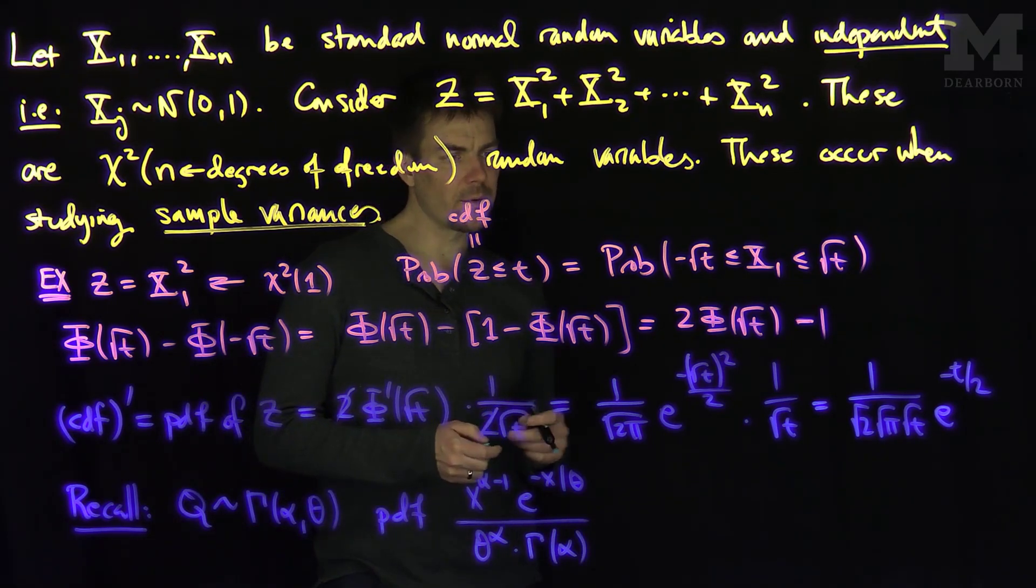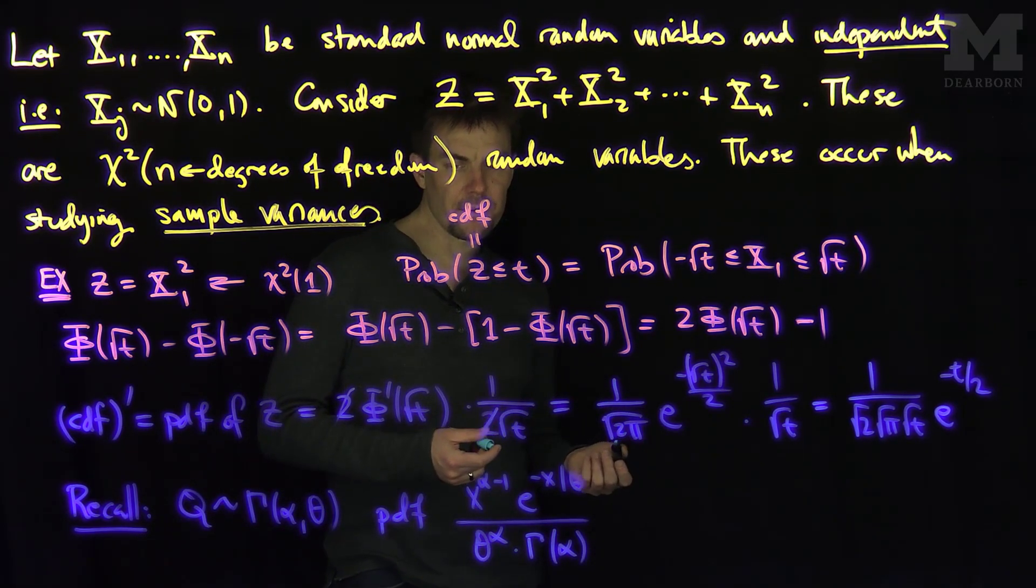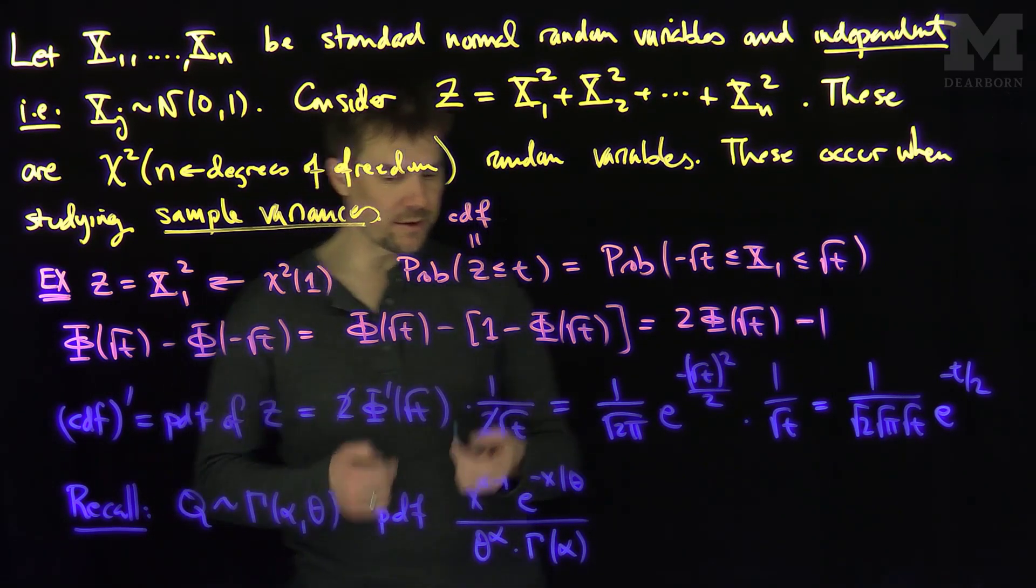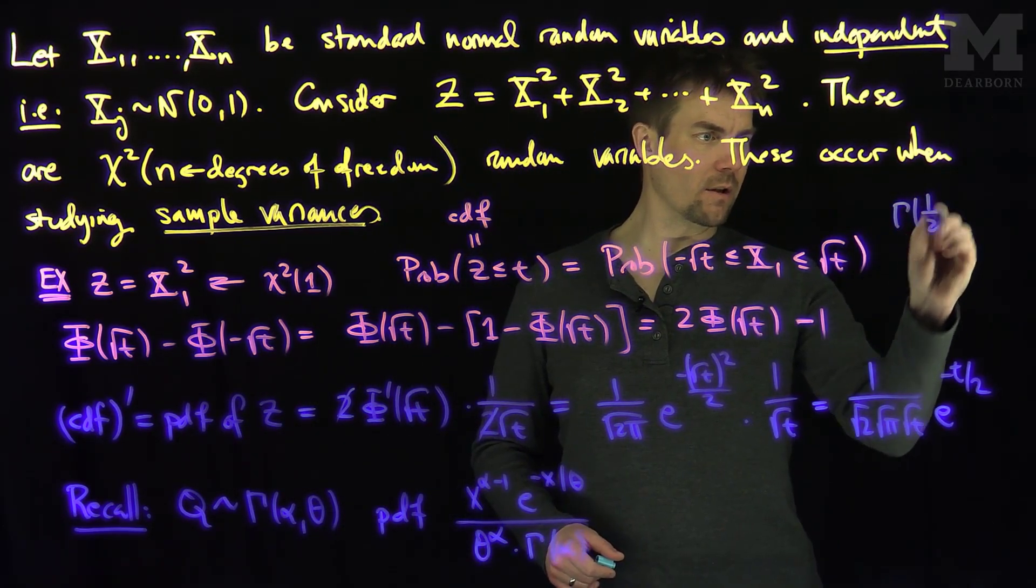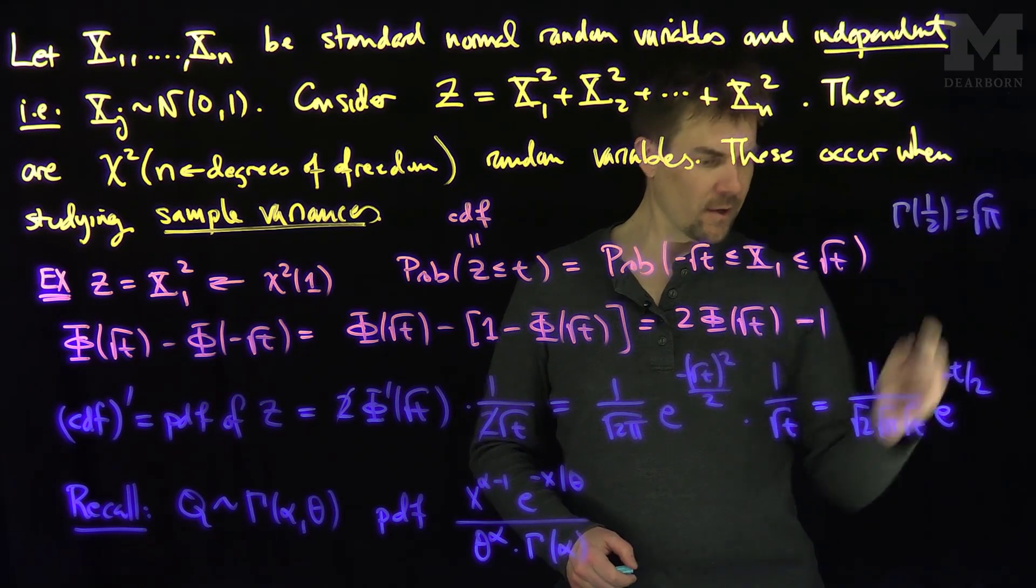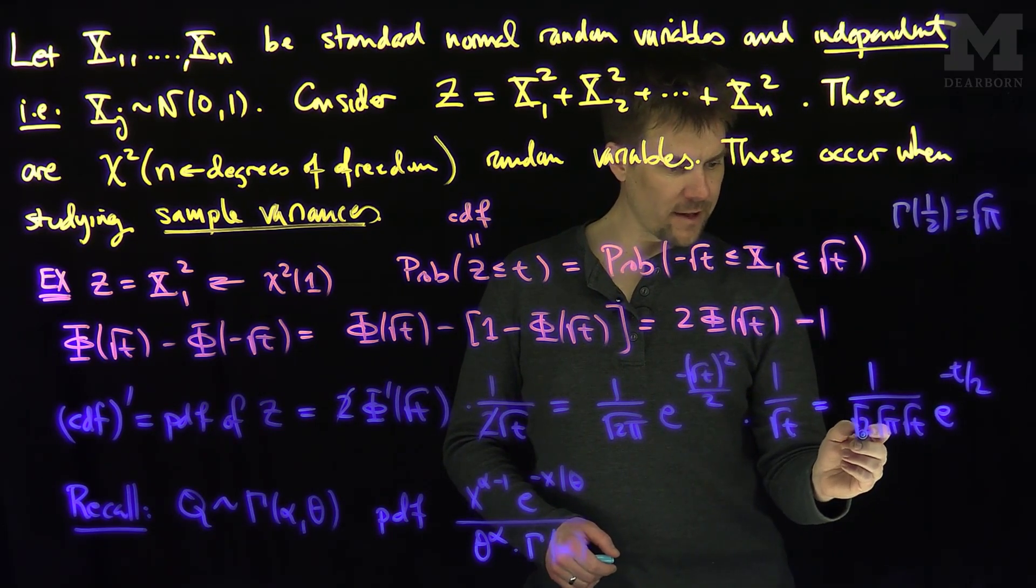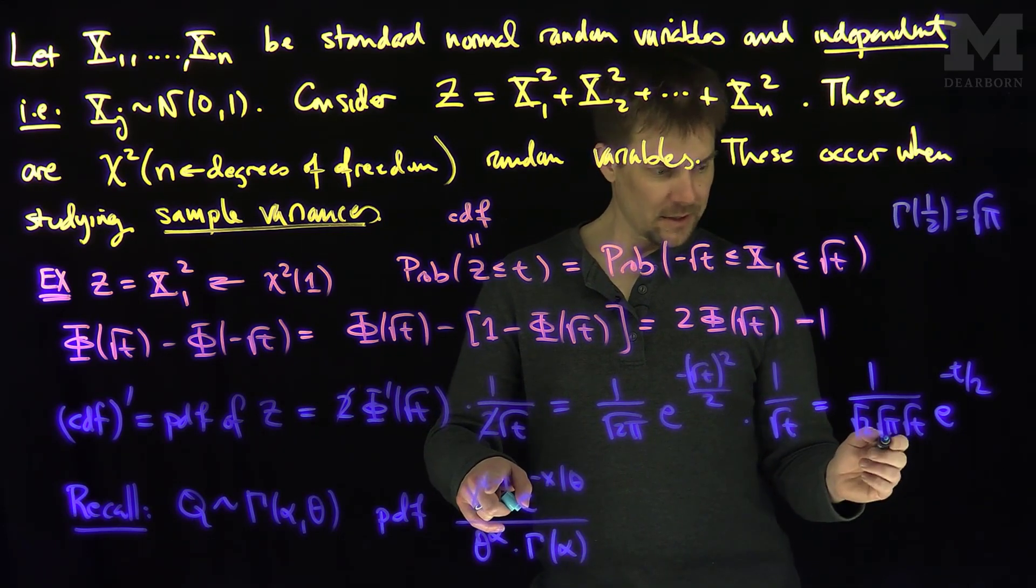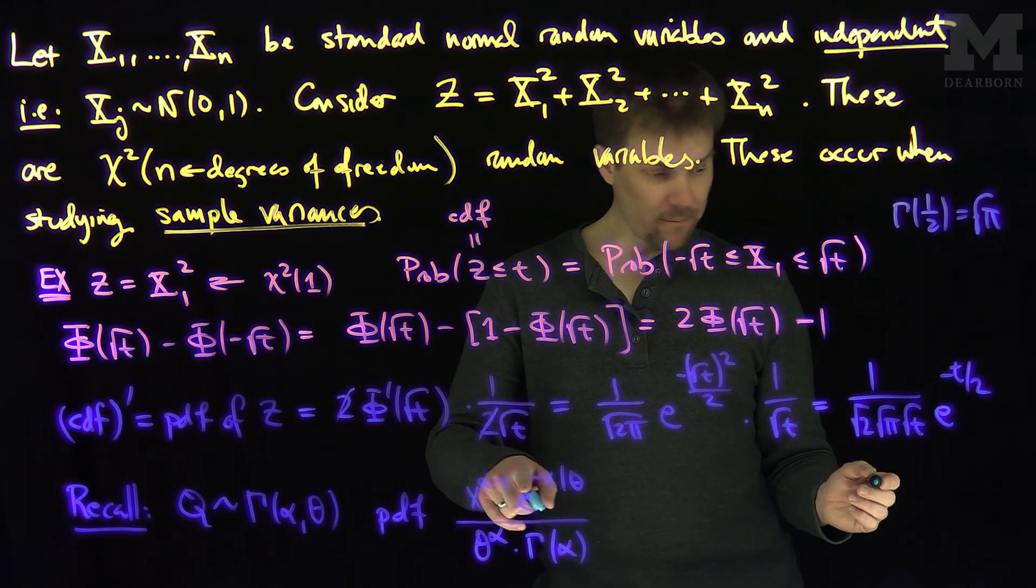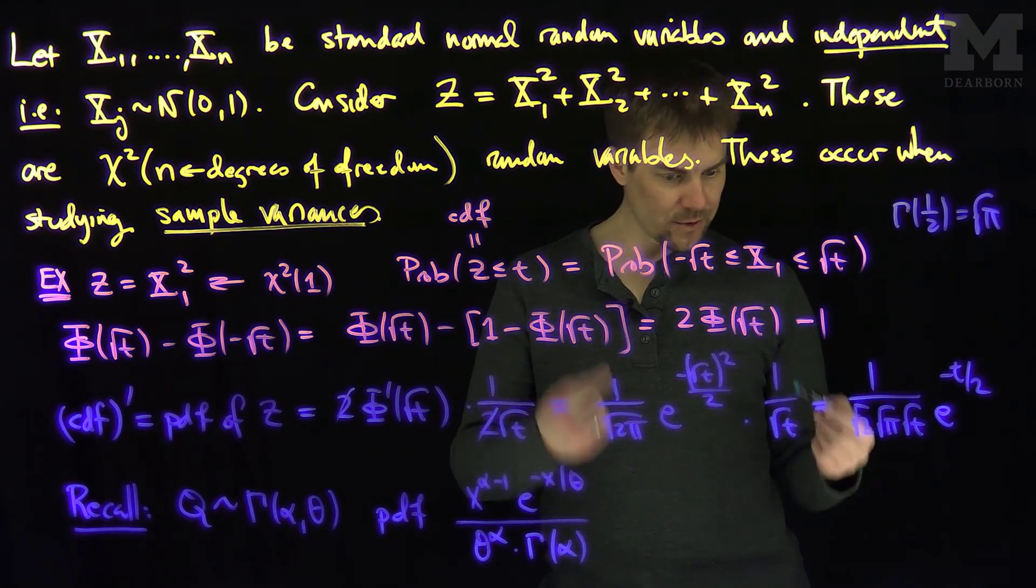And now, it turns out that gamma of one-half is equal to the square root of pi. So, this over here is gamma of one-half. That's two to the one-half, my alpha. That's t to the one-half minus one of the denominator, and my theta is equal to two.